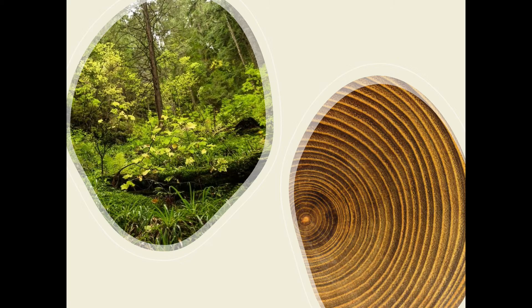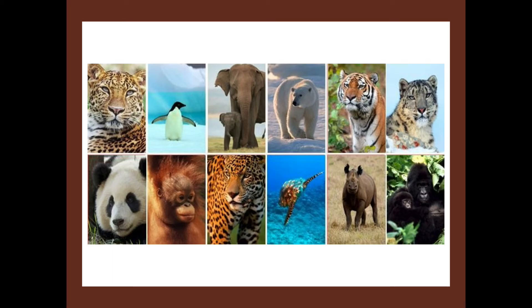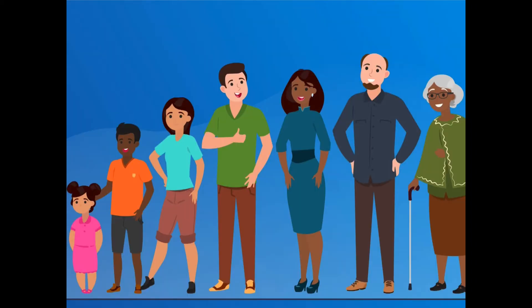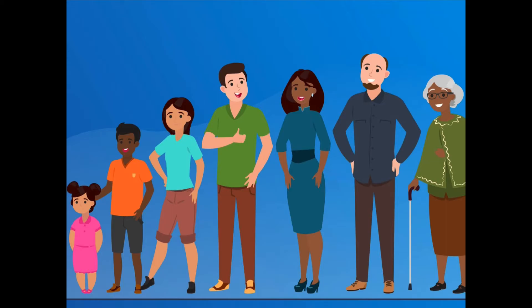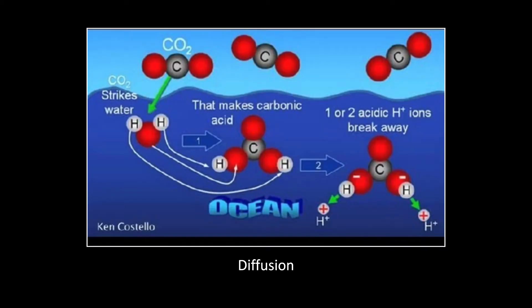Plants are stores of carbon — as they grow, you can see tree rings here, and more and more carbon gets stored, all thanks to photosynthesis. Animals are stores of carbon too, and we've already mentioned that food chains are transfers of carbon. Growth — as plants, animals, and humans grow, the more carbon they store.